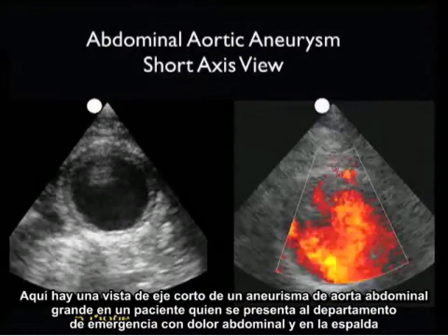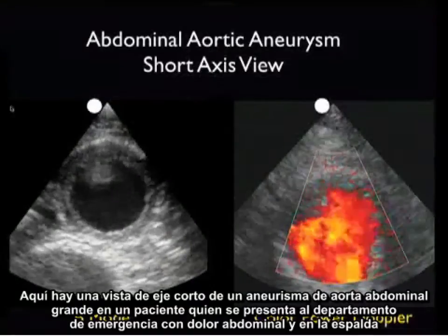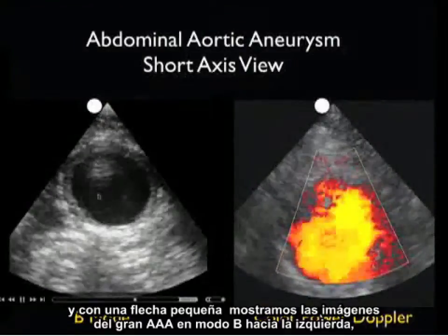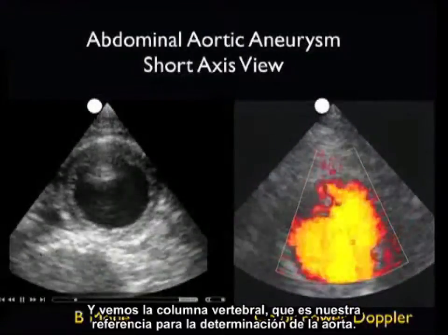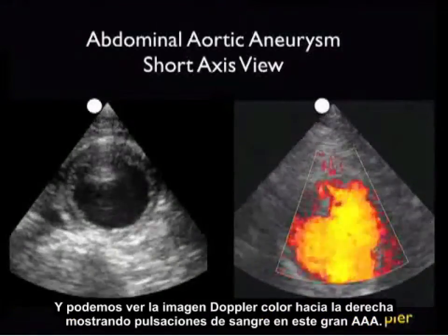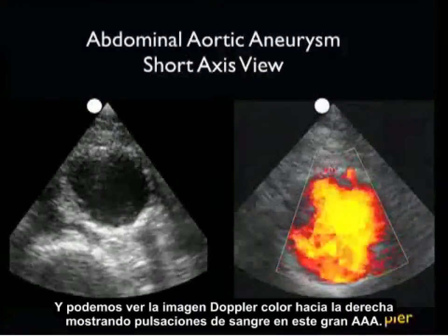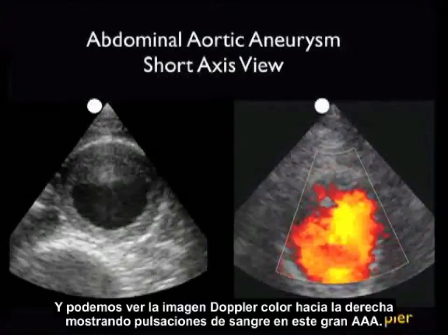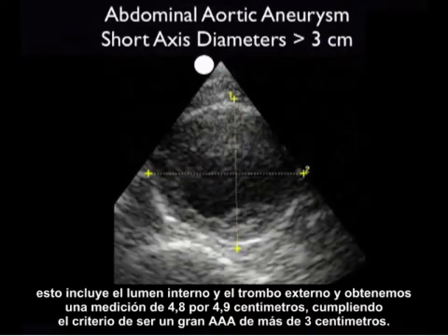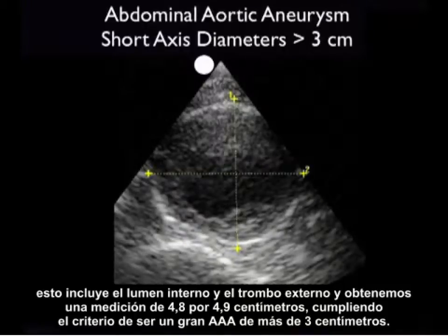Here's a short axis view of a very large AAA in a patient who presented to the emergency department with abdominal and back pain. The B-mode image shows the large AAA with the spine as our landmark, and the color power Doppler image shows pulsations of blood within the AAA. Measuring from outer wall to outer wall in short axis configuration gives 4.8 by 4.9 centimeters, meeting the criteria of a AAA greater than 3 centimeters.